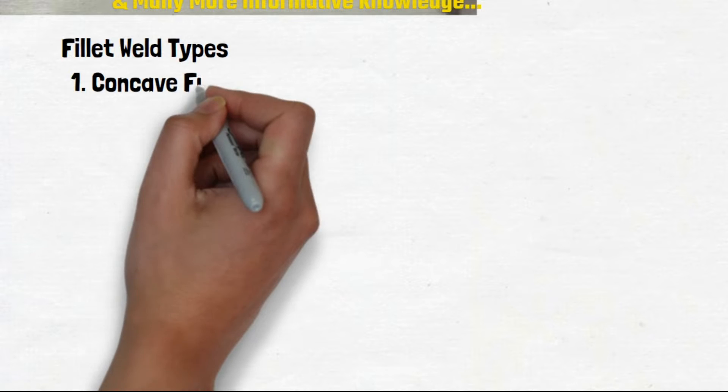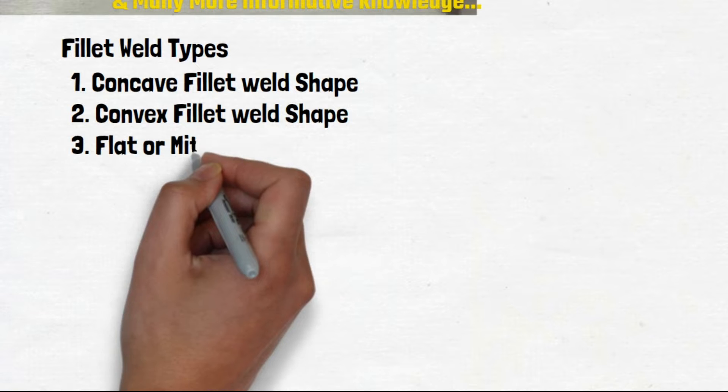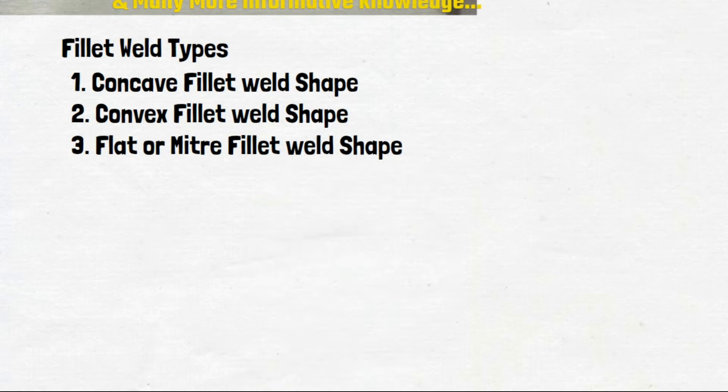Types of a fillet welds. Fillet welds are mainly three types as concave fillet weld shape, convex fillet weld shape, and flat or miter fillet weld shape.